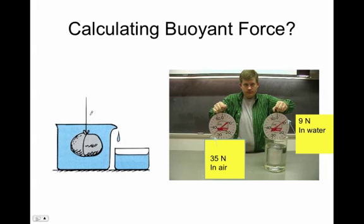This picture is just showing you displacement. When an object is put into water, it displaces an amount of water equal to the volume of the object. The weight of the water in newtons tells us what the buoyant force is of the liquid on the rock. If we took a force meter and measured the force of gravity or the weight of the water, that would be equal to the buoyant force that the liquid is pushing up on the rock.